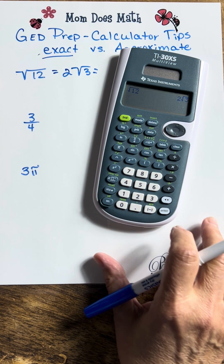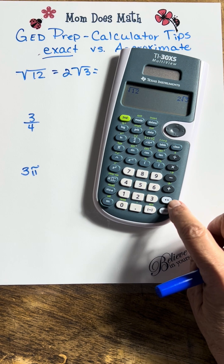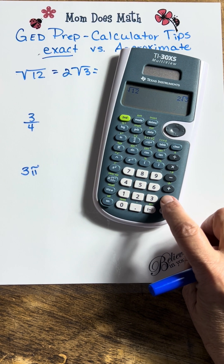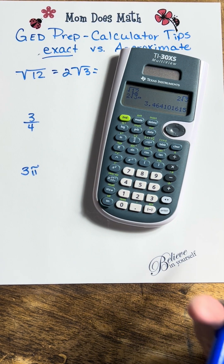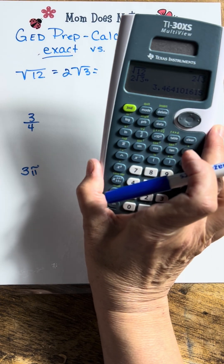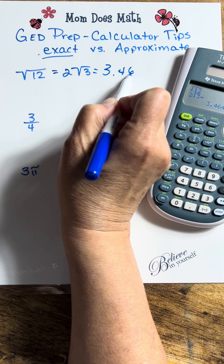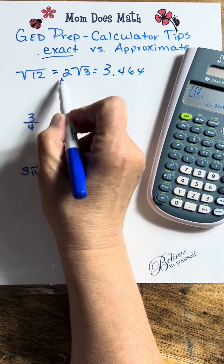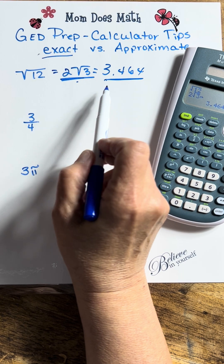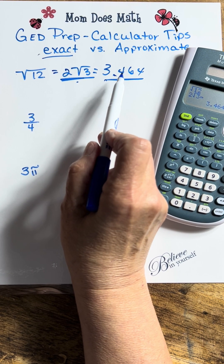But what if it tells me to give a decimal? The way you change this to a decimal is this little button right here with the two arrows going back and forth. If you press that, now it tells me 3.4641, and it actually goes on and on. That's why this is called the exact answer and this is the approximate answer, because this is actually rounded off.